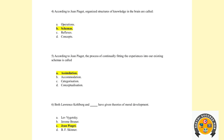Fourth question: According to Jean Piaget, the organized structure of knowledge in the brain is called what? That is schema — the building blocks of our knowledge. Organized structure of knowledge — this is schema.